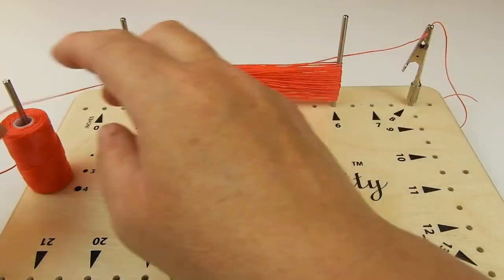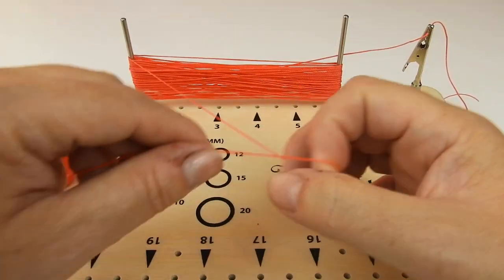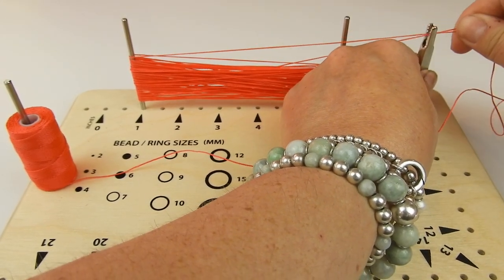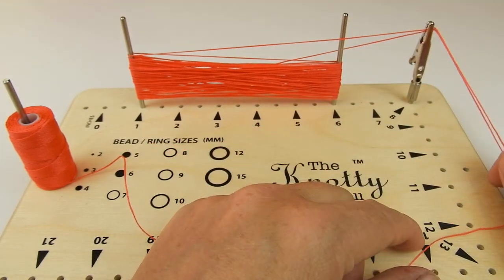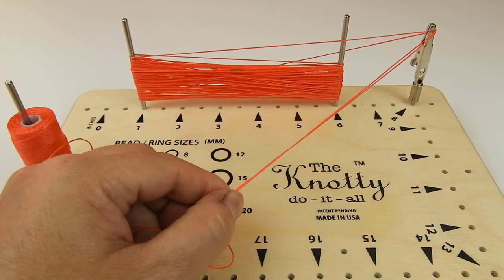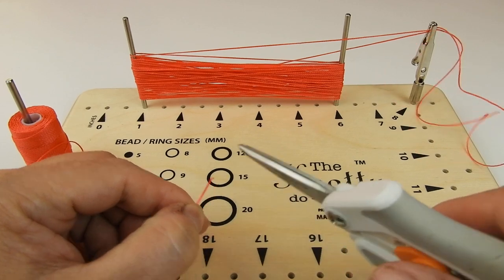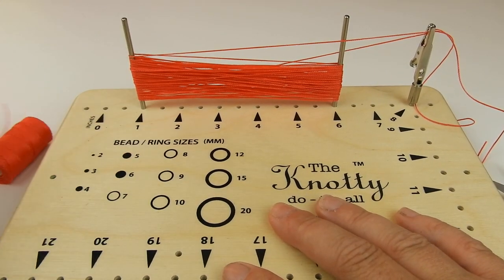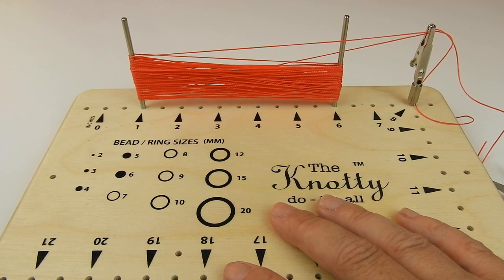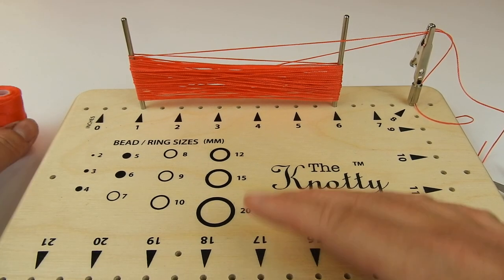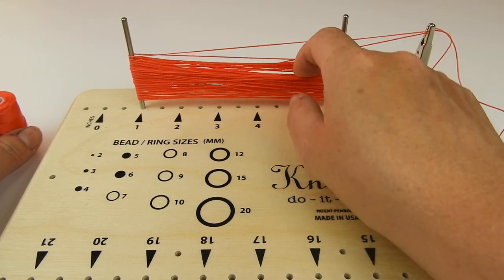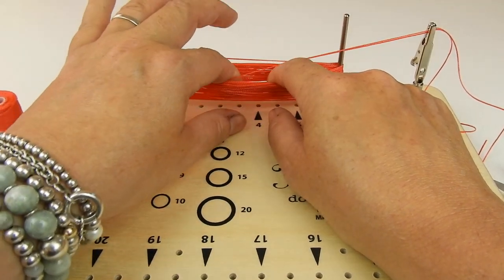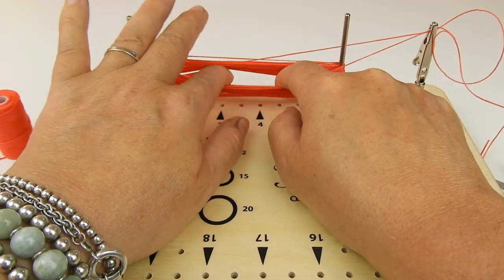I'm going to leave that there, I think that's going to be a nice thick tassel. I'm just going to clip that over and I can take the end here and cut that away. We can now remove the pin with the eslon on it.